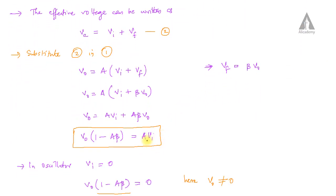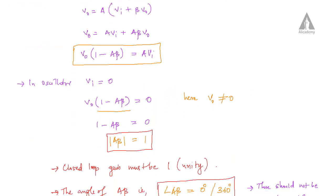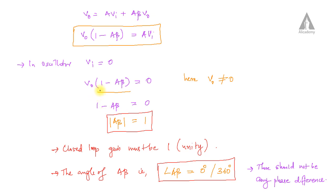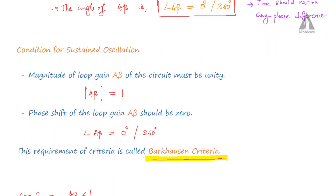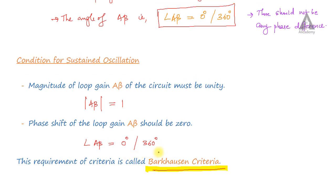Since we don't have any input voltage, Vi equals zero. From our equation, V0·(1 minus A·beta) equals zero. Since V0 is not equal to zero, the modulus of A·beta must be equal to unity. The angle of A·beta must be equal to 0 degrees or 360 degrees. These are the Barkhausen criteria conditions for sustained oscillations.